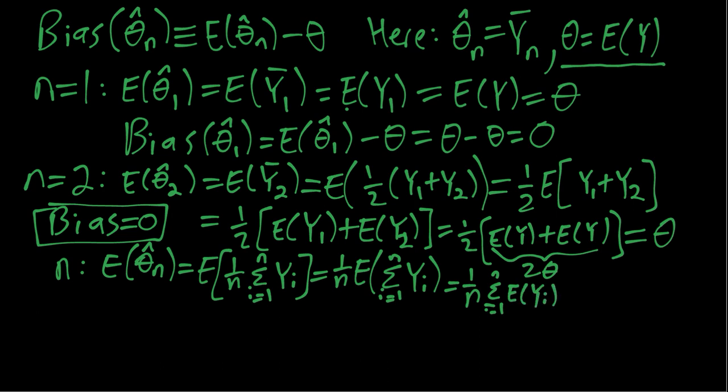And then again by the IID assumption, all of these expected value of Yi are all the same and all equal to theta. So we have n of them, we have n thetas, and then we have that one over n out front. We again end up with theta. So in general, if we have IID sampling, and actually even without independence, as long as we have this identically distributed sampling, the sample mean is an unbiased estimator of the population mean.